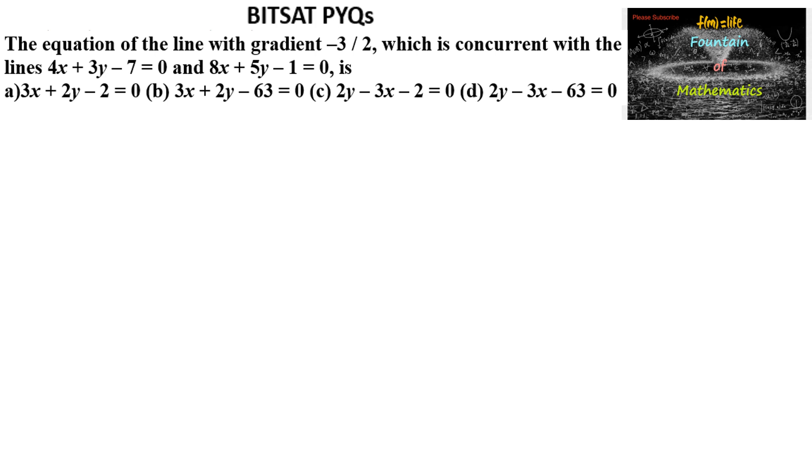We need to find the equation of the line which is concurrent with the lines 4x plus 3y minus 7 is equal to 0 and 8x plus 5y minus 1 is equal to 0. Concurrent means passing through this point.